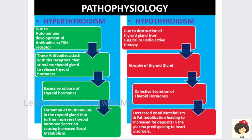In the pathophysiology of hyperthyroidism — in Graves' disease, autoantibodies attach to TSH receptors and start producing more and more thyroid stimulating hormone. This causes excessive release of T3 and T4, which increases basal metabolism. When more hormone is secreted, more multi-nodules are formed in the thyroid gland, and these nodules also stimulate more thyroid hormone secretion, further increasing basal metabolism.